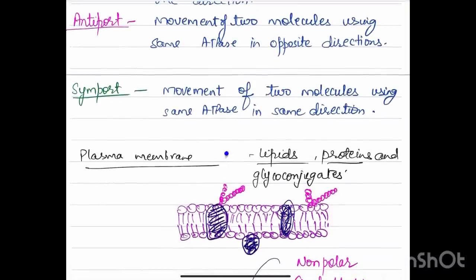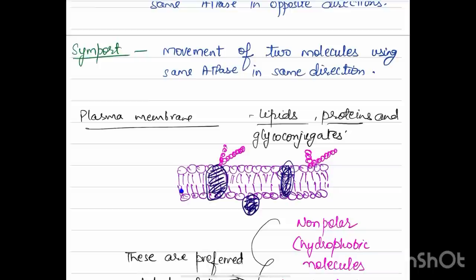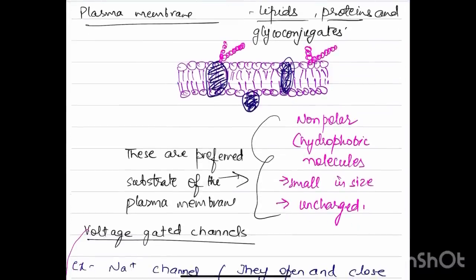Only one ATPase is used in this. Plasma membrane is made up of lipids, proteins, and glycoconjugates. There is a lipid bilayer in which the proteins float. They have different properties. They can be integral, they can be peripheral. The preferred substrate of the plasma membrane is non-polar hydrophobic molecules which are small in size and uncharged.